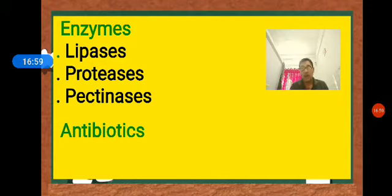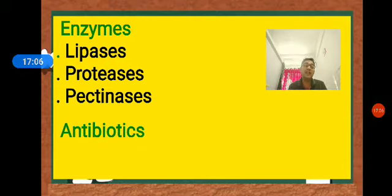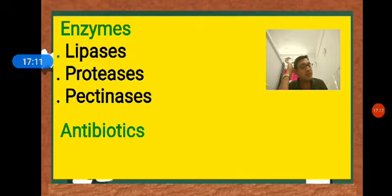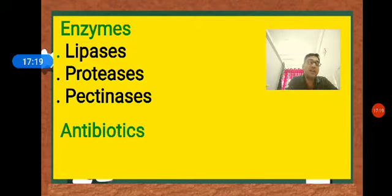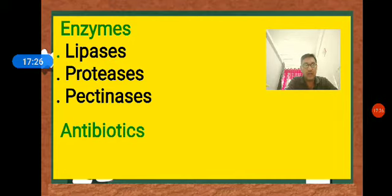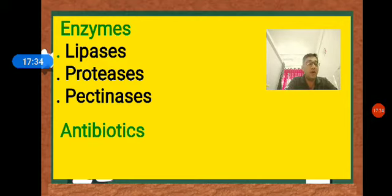Penicillin, cephalosporin, fumagillin, clavicin, and bacatin are antibiotics obtained from fungi. Alexander Fleming accidentally discovered penicillin while working on the bacteria Staphylococcus — he unexpectedly found that the fungus Penicillium notatum had an antibiotic effect.